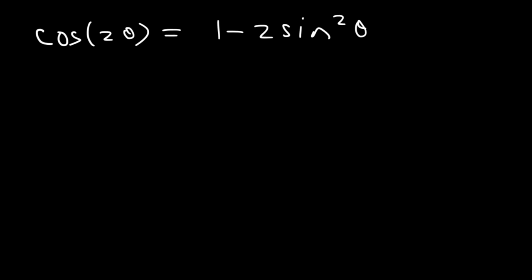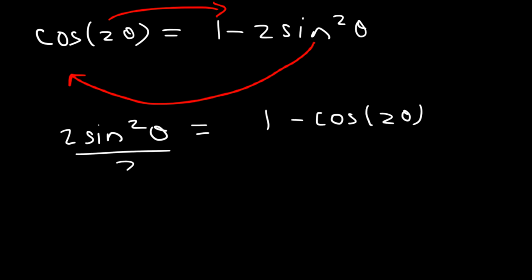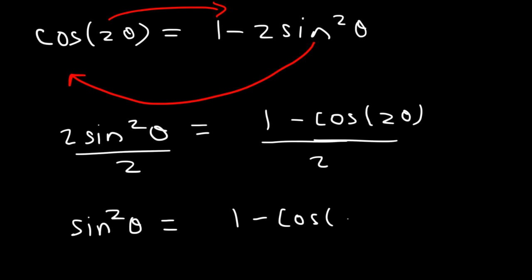All you have to do is isolate sine squared in this equation. Move 2 sine squared to the left side so it becomes positive, and move cosine 2θ to the right side. So 2 sine squared θ equals 1 minus cosine 2θ. Divide by 2, and here's the power reducing formula: sine squared θ equals 1 minus cosine 2θ divided by 2.